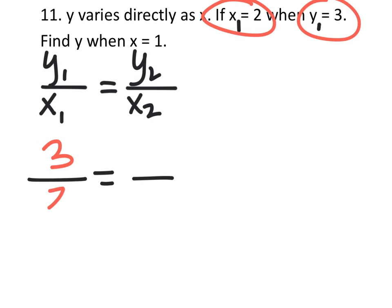So I would have 3 over 2 equals the y value we don't know. Right here, we're just going to keep that as y, but we want to know what that is when x equals 1.